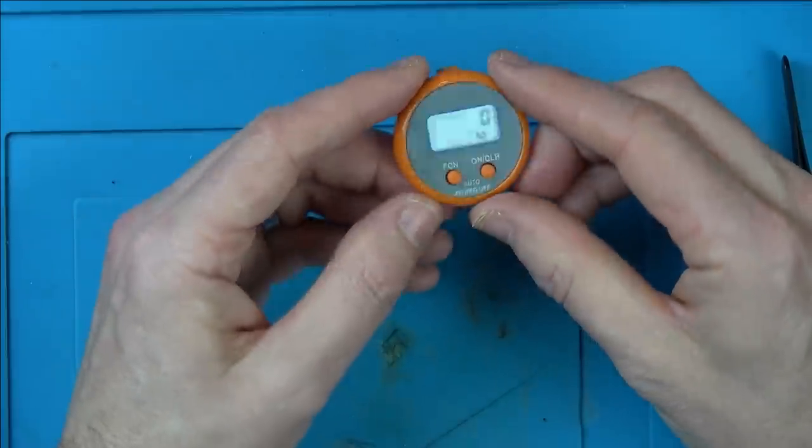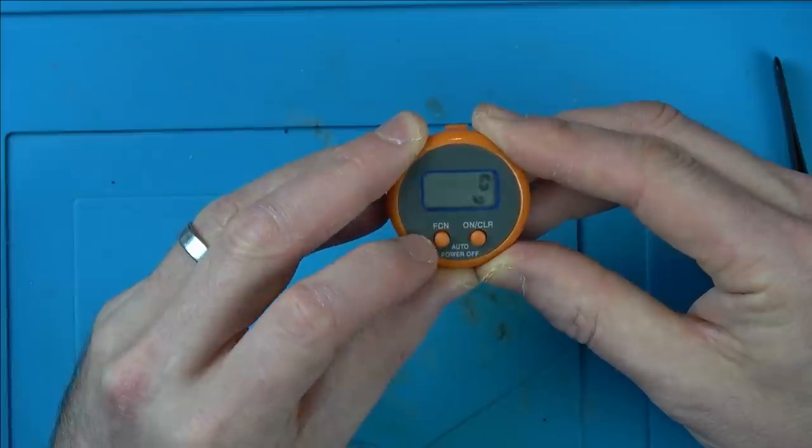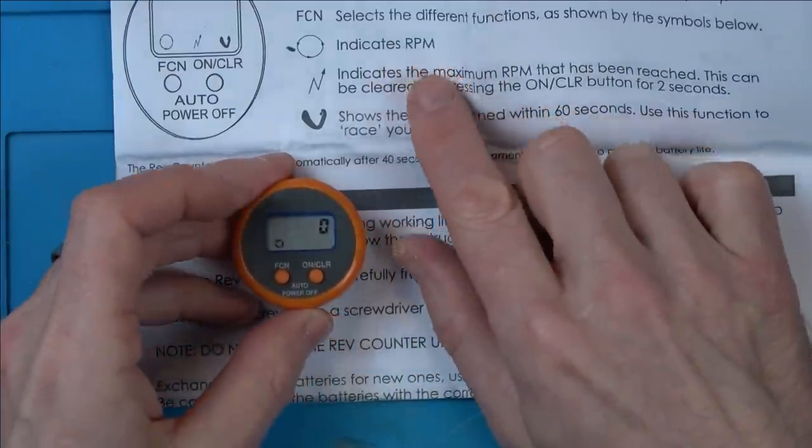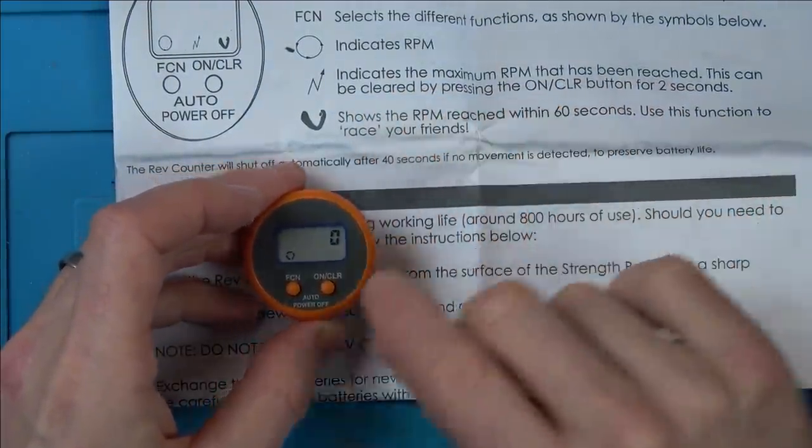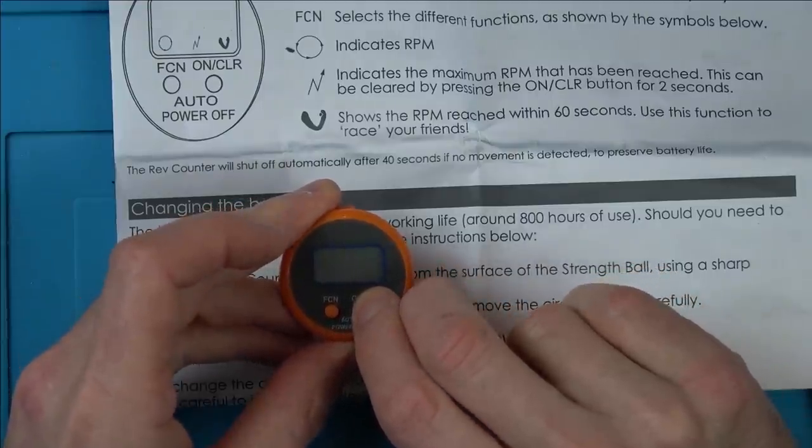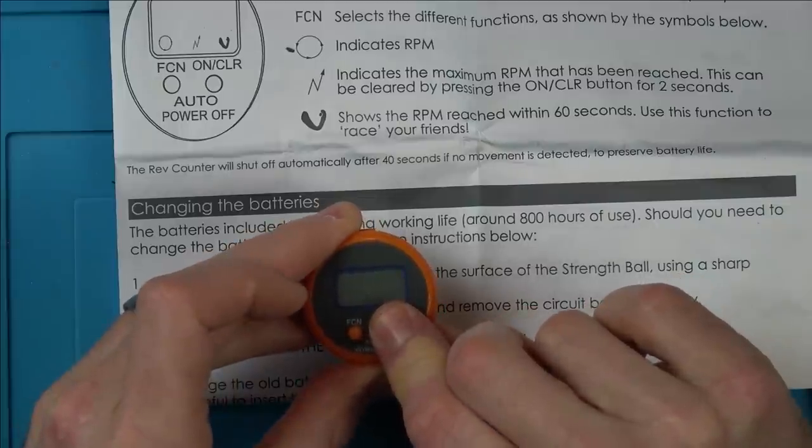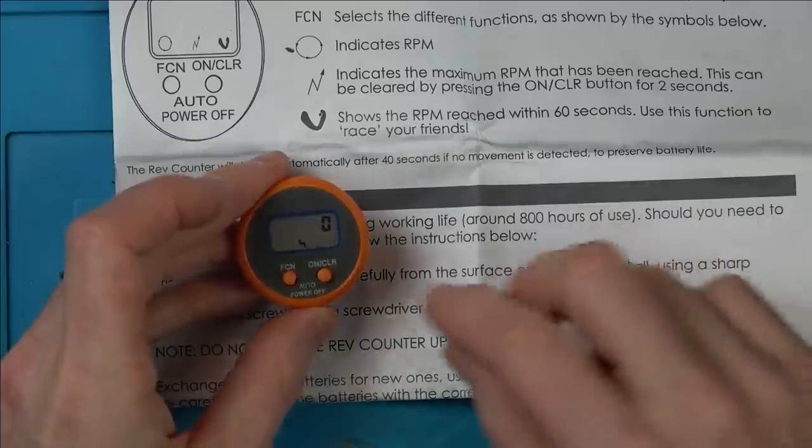Right, let's see now. Here we go. Excellent. Right, I'll have to read up what they mean. So that indicates RPM, indicates a maximum RPM that has been reached. This can be cleared by pressing the on and clear button. So let's clear that. Okay, so that's cleared now.